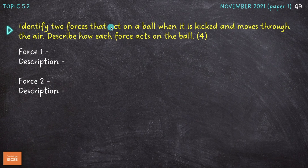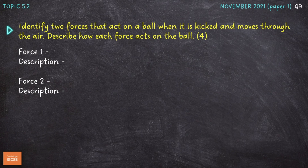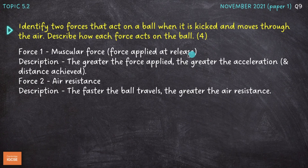Next: identify two forces that act on a ball when it's kicked and moves through the air, and describe how each force acts on the ball. This is very familiar — similar to the diving question, the shuttlecock question, and the sprinter question. There seems to be only a limited number of questions asked on simple biomechanics, and forces acting on performers or objects moving through the air is a very common one. The first force I've gone for is muscular force — the force applied at release. The greater the force applied to the ball as it's kicked, the greater the acceleration and therefore the greater the distance achieved.